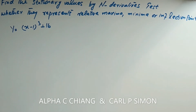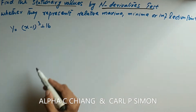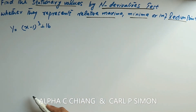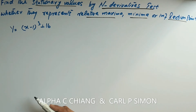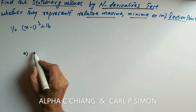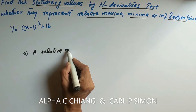Today we are looking for the stationary values by using the nth derivative test. We will find the stationary values — whether they are a relative maxima, relative minima, or an inflection point. First of all, what is the nth derivative test and what are its conditions? The first condition is relative maxima.